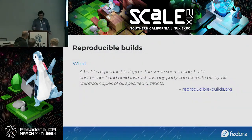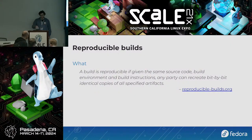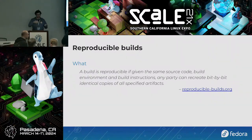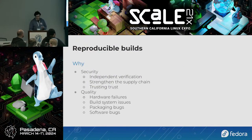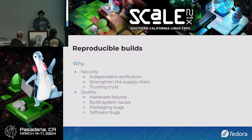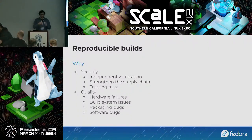This is the official definition from reproduciblebuilds.org: a build is reproducible if, given the same source code, build environment, and build instructions, anybody can recreate bit-by-bit identical copies of everything. So if you start from the same things and do the same process, you get the same output, and different parties can verify this. There are two main angles to why you'd care: a security angle and a quality angle, and different people care about different things.